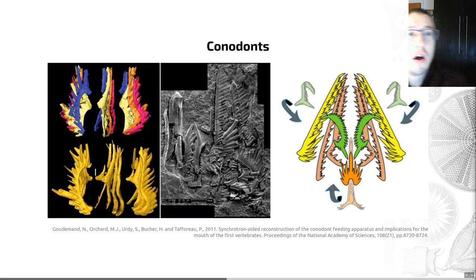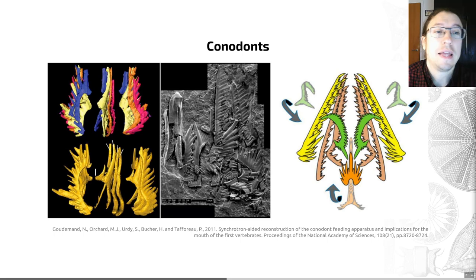So conodonts range from probable Precambrian members, as I've just mentioned, through to the Triassic, and they're quite common and useful, in particular in Cambrian deposits. They have indeed become the premier microfossils for dating Paleozoic shallow marine rocks, especially carbonates. They've been widely used as a result in both paleoecological and biogeographical studies in the Paleozoic.